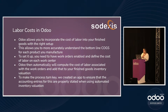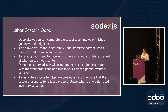Odoo allows you to incorporate the cost of labor into your finished goods with the right setup. This is going to allow you to more accurately understand the bottom-line cost of goods sold for each product that you manufacture. To set it up, you have to have work orders enabled and you need to define the cost of labor on each work center that you set up. Odoo will then automatically compute the cost of the labor associated with the work orders and add that to your finished goods inventory valuation.